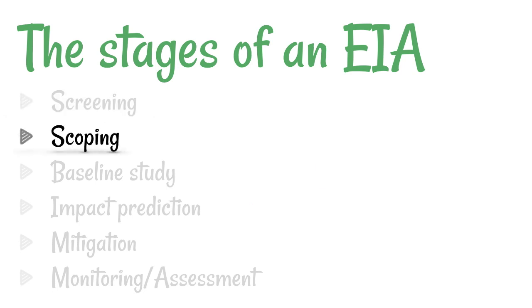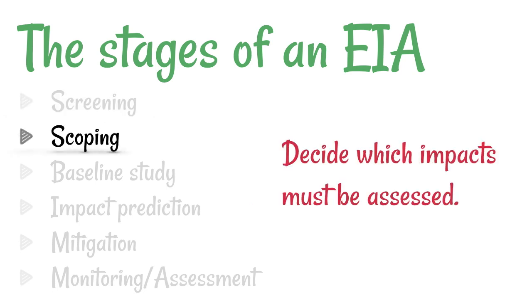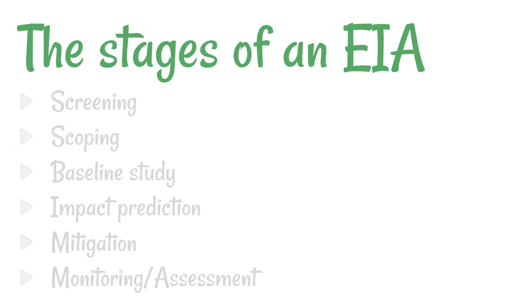Next is scoping. Scoping is a way of deciding which impacts need to be assessed, and that's going to vary depending on the project and the location.